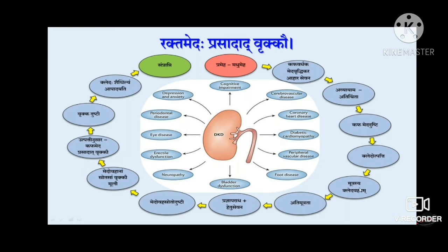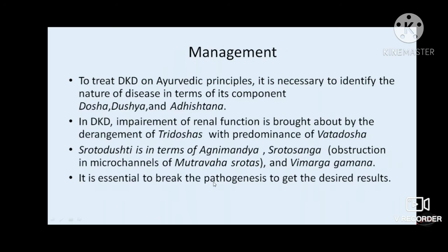Kapha and meda dushti will lead to excessive kleda utpatti or excess kleda formation in the body. Since the job of mutra is to carry away all the kleda out of the body, whenever there is excess kleda there is excessive urination. If nidanas persist at this stage, it leads to further meda dushti.